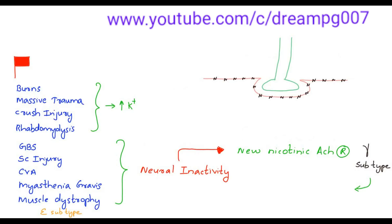This gamma subtype of nicotinic acetylcholine receptor provides single-channel conduction and is open, which eventually leads to hyperkalemia.